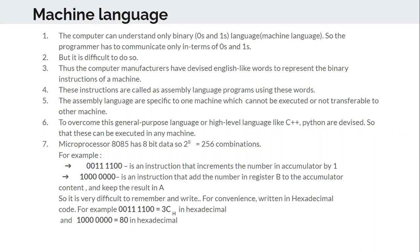The computer will understand only the binary numbers, that is zeros and ones. But we cannot write programs in zeros and ones because it is difficult for human beings to write only in zeros and ones. The computer can understand only binary, which we otherwise call machine language. So the programmer has to communicate only in terms of zeros and ones, but it is very difficult to do.